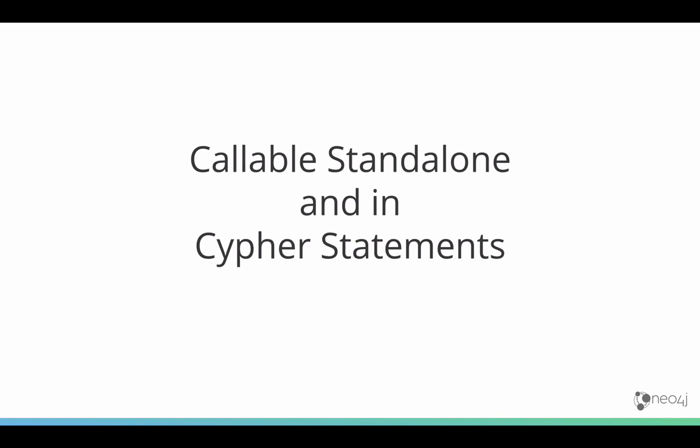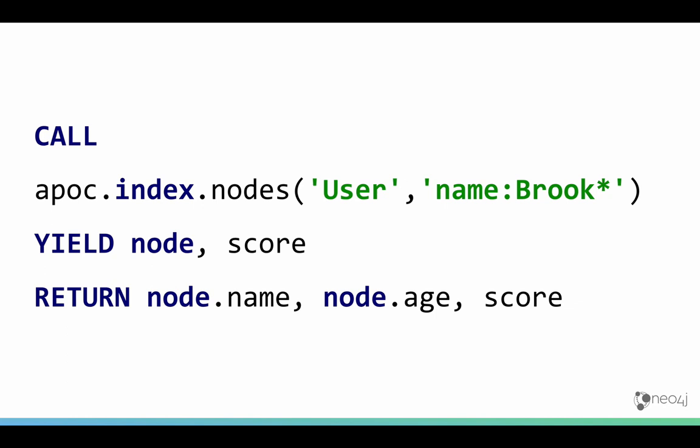Here's an example: we call the APOC index nodes function, pass in an index name and the query, and it returns a node and a score. We can then return the node and score as results from our query. You could also call APOC index nodes as a standalone procedure, and the query would return node and score as the two columns.